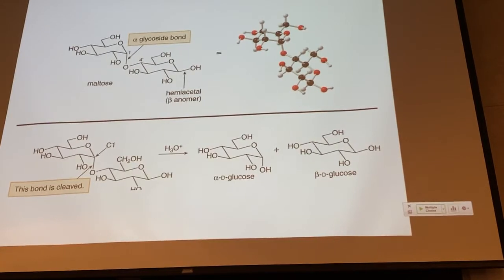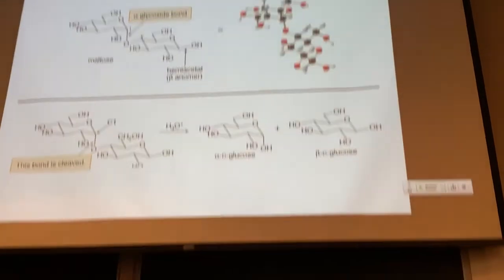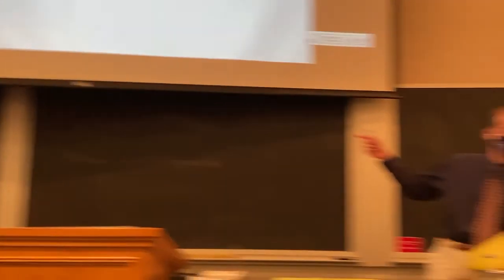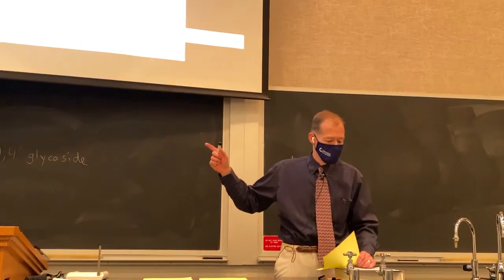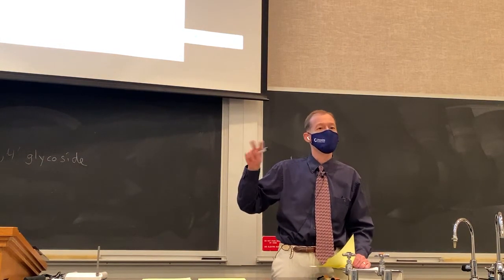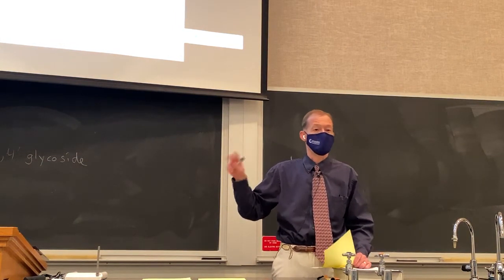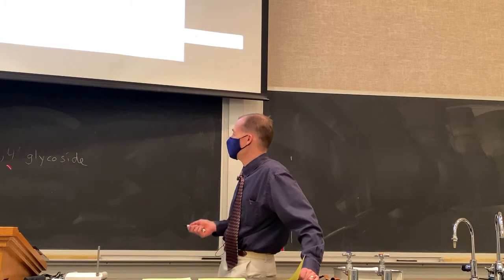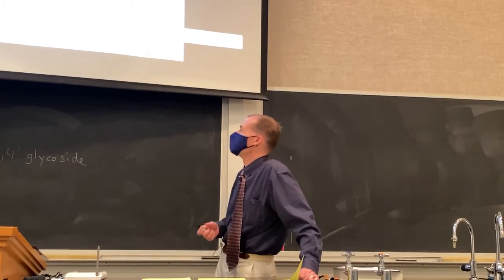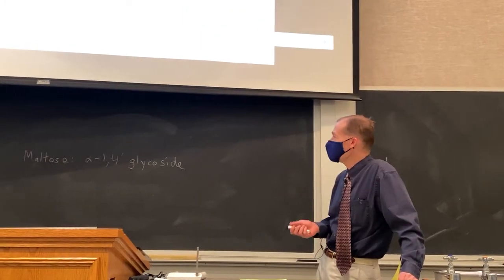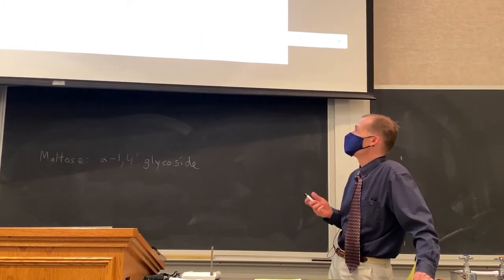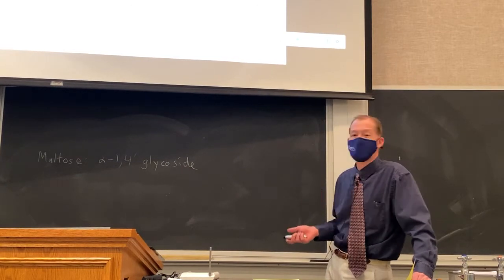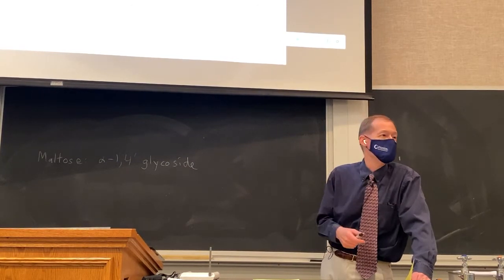We would refer to maltose as an alpha-1,4' glycoside. Maltose, as you can see, is just two units of glucose linked together in an alpha-1,4' fashion.